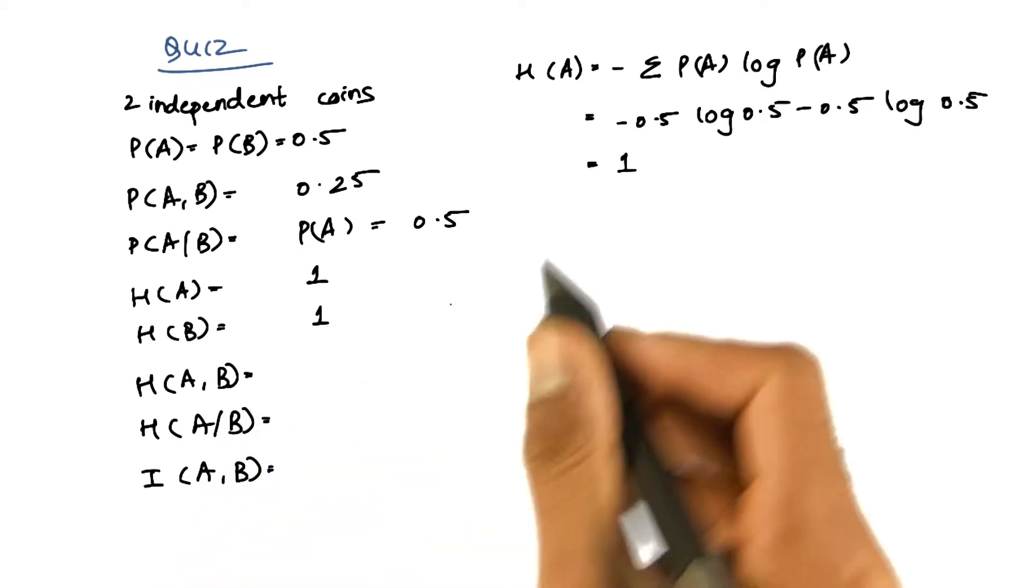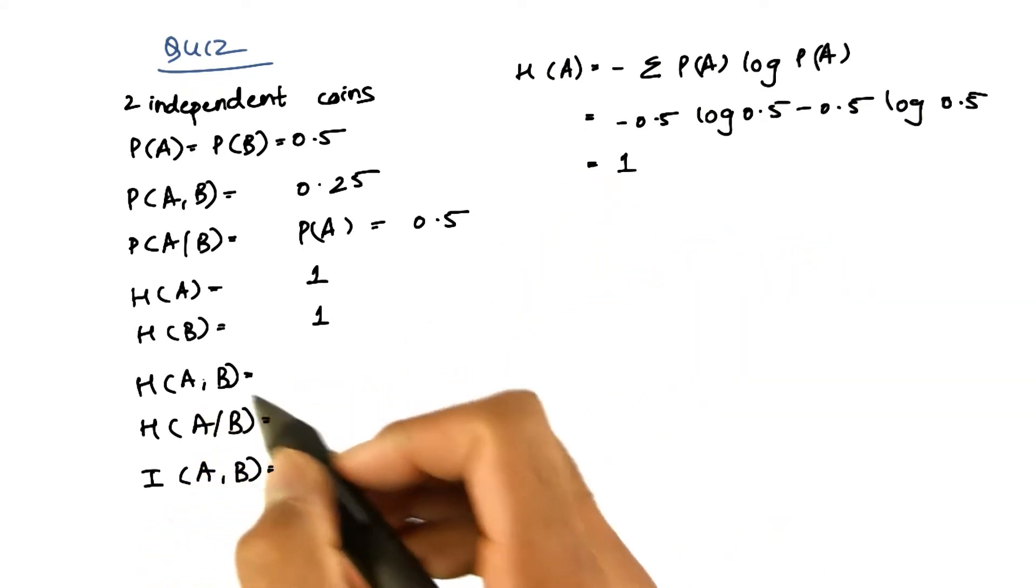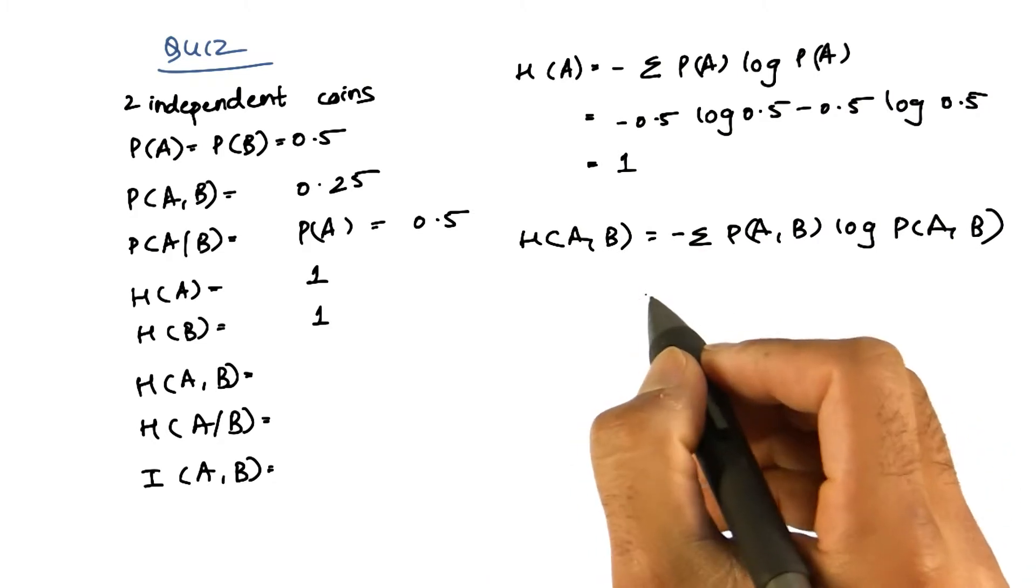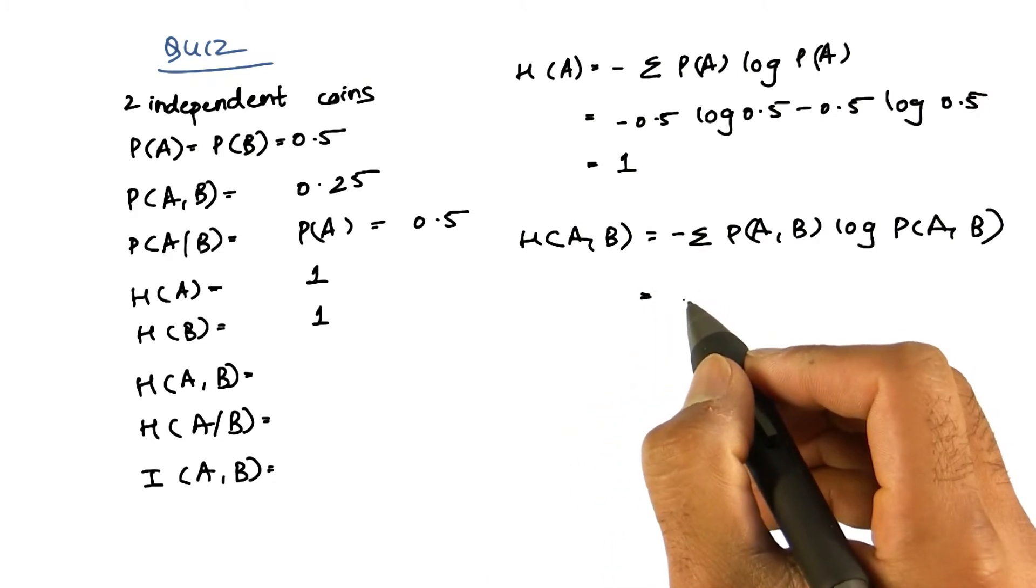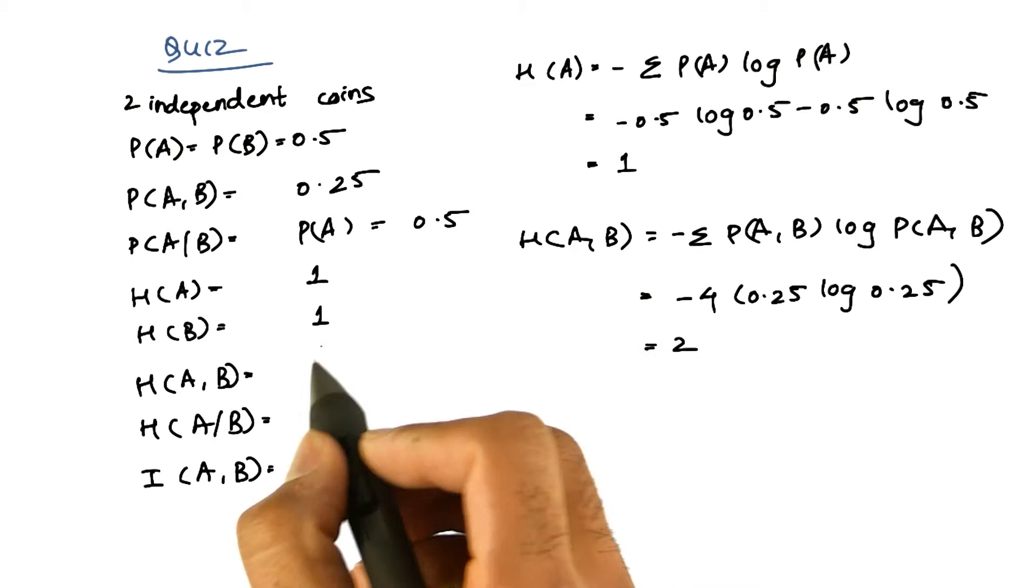What is the joint entropy? It's given by this formula. If we substitute the values, we get the joint entropy of A and B as 2.